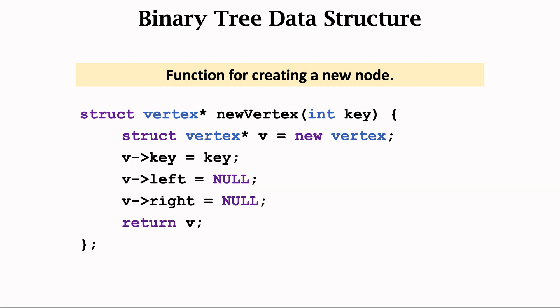Initialize the left and right pointers to null, which means the vertex has no child. Finally, return the created vertex, v.